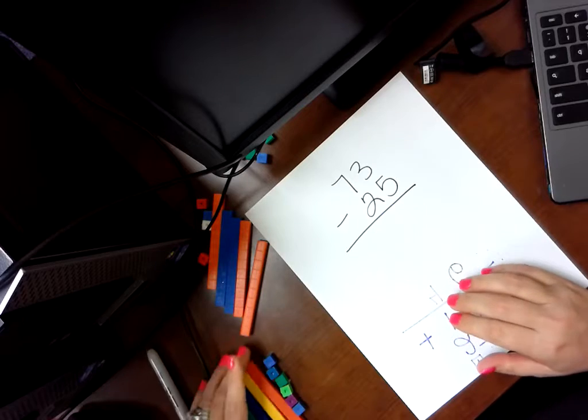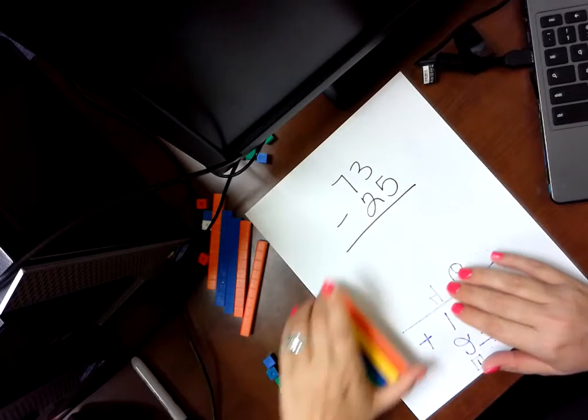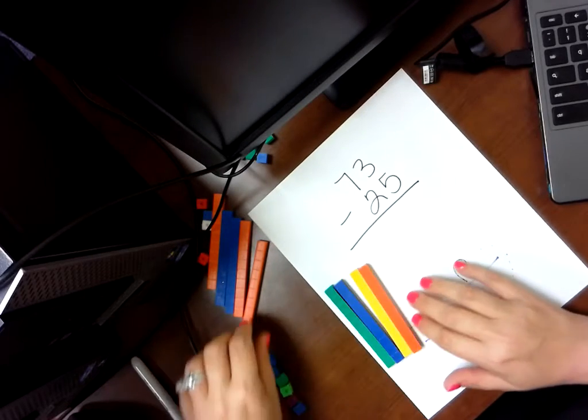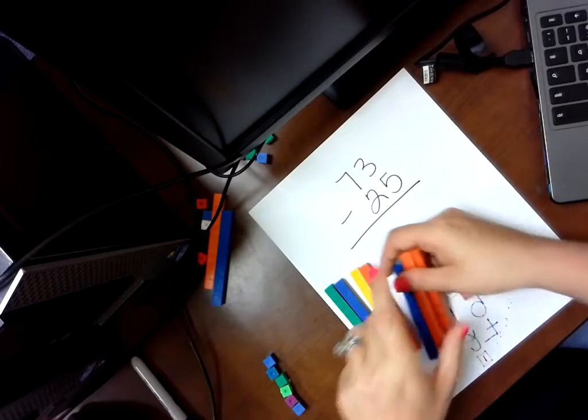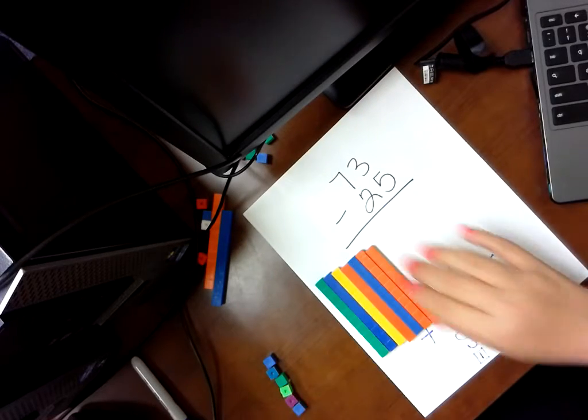So I need 73. 10, 20, 30, 40, 50, 60, 70. 3.